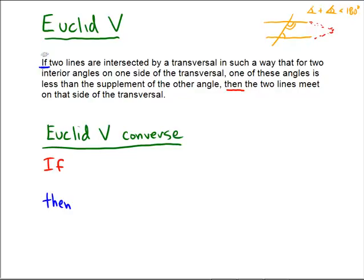So what is the converse of this going to be? Well, the converse, of course, reverses the antecedent and the consequent. So our new statement, the Euclid 5 converse, would be if two lines intersect on one side of a transversal.